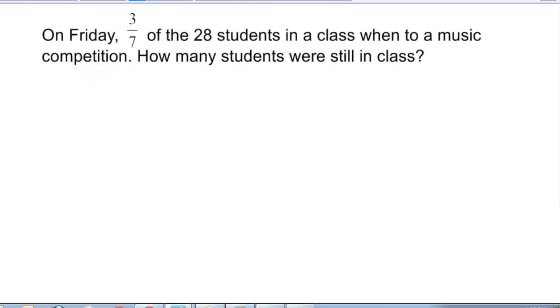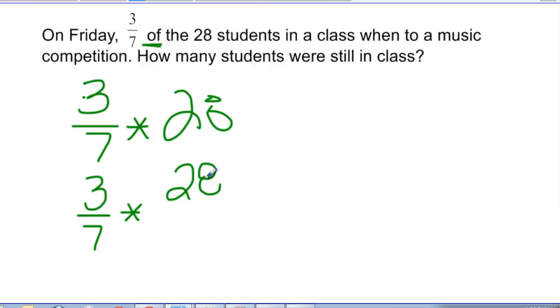So here's another question, another example that we're going to do. And this is multiplying a fraction by a whole number. On Friday, 3 sevenths of the 28 students in the class went to a music competition. How many students were still in the class? Remember that 'of' tells me to multiply. So I'm now going to take 3 sevenths and I'm going to multiply that by 28. Okay, well, you told me to multiply the numerators and multiply the denominators. 28 doesn't have a numerator or denominator. But now I need to think back to the fact that any whole number can be rewritten as a fraction if I just put it over 1. So I'm going to take 3 sevenths times 28 over 1.